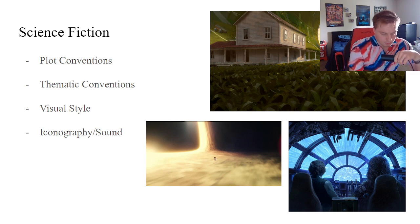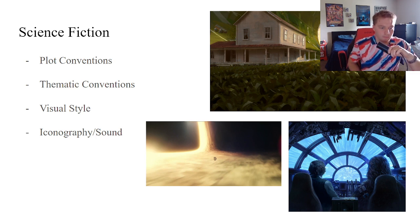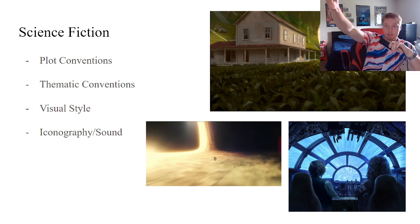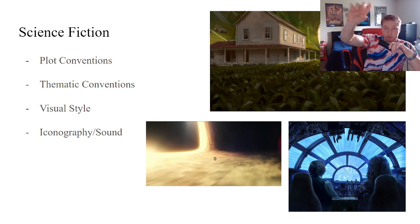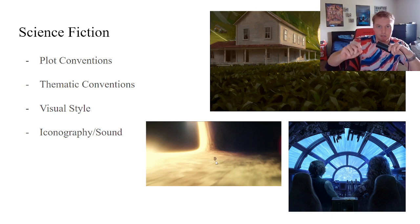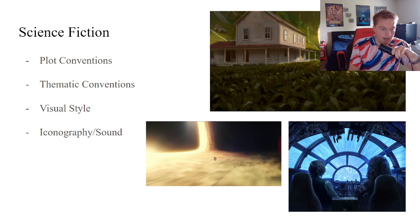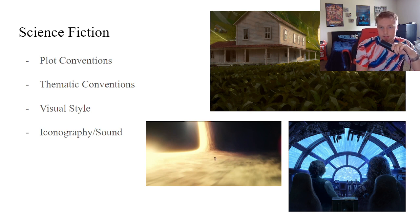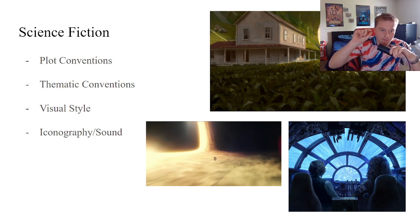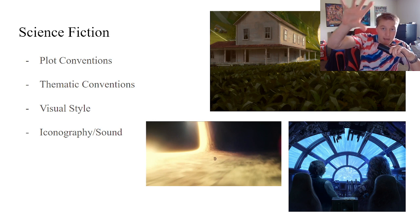Another visual element I noticed after rewatching these movies is that in science fiction films there's often something very, very big in the foreground or background alongside something very small. In Interstellar, for example, the spaceship right in front of the massive black hole. In Star Wars, the Death Star — giant — and then the tiny Millennium Falcon approaching it. There's a lot of comparison between massive and small in science fiction.